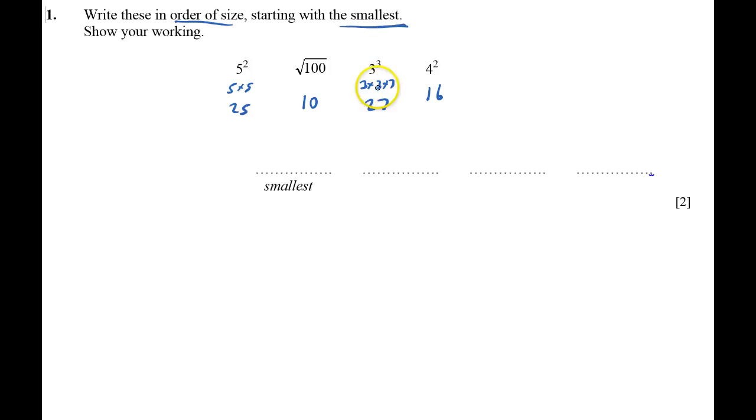I've got to start with the smallest. And so the smallest here is 10, so I need to put down root 100. The next smallest is 4 squared, 16. I'm going to cross them out as I use them.